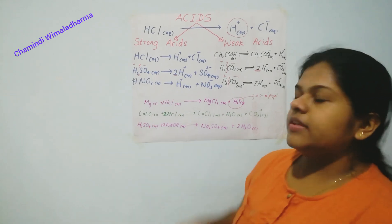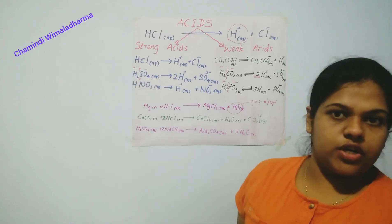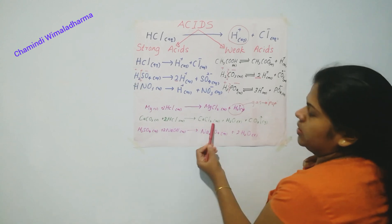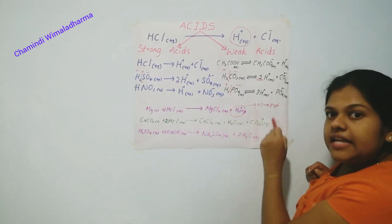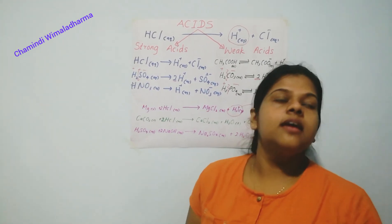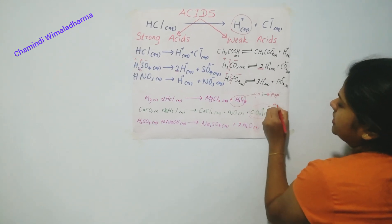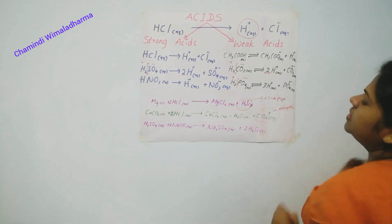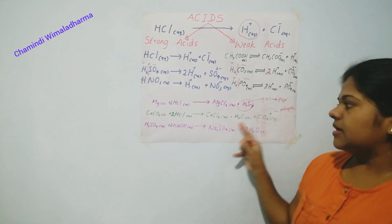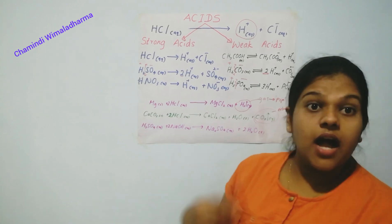Acids also react with carbonates and bicarbonates — either Calcium Carbonate (CaCO3) or Calcium Bicarbonate (CaHCO3). They produce salt (Calcium Chloride), water, as well as Carbon Dioxide. This is another way to identify Carbon Dioxide — normally when a glowing splint is inserted, the flame will get extinguished. The salt and water are produced, and this is how acids react with carbonates or bicarbonates.